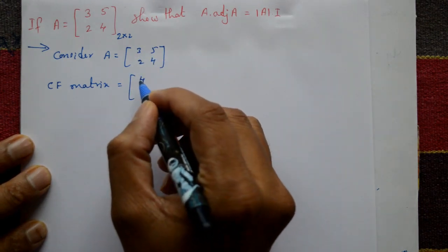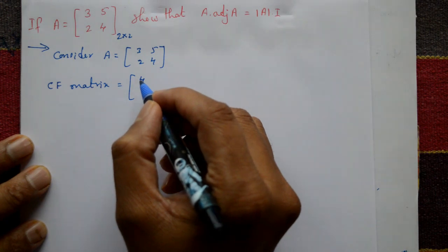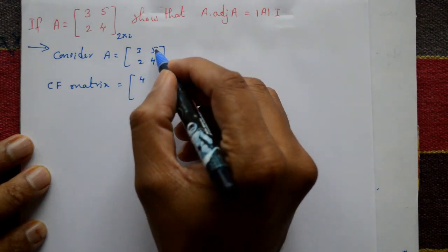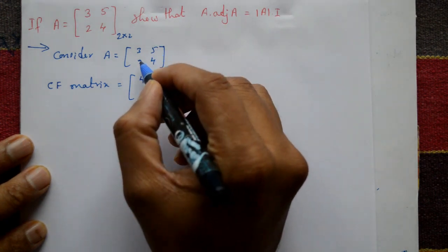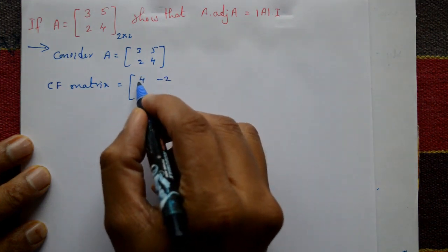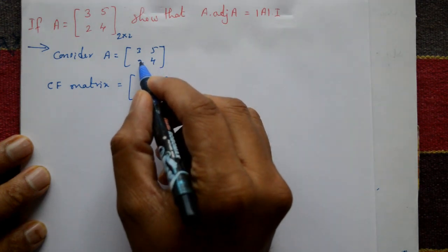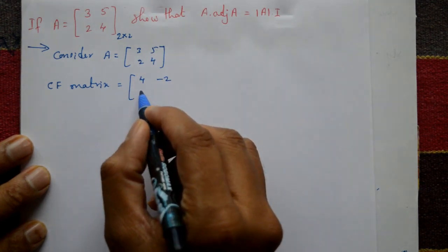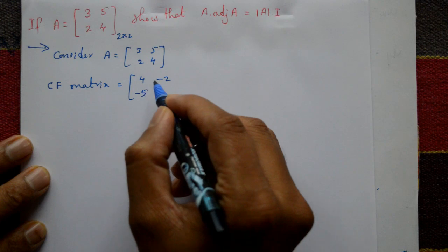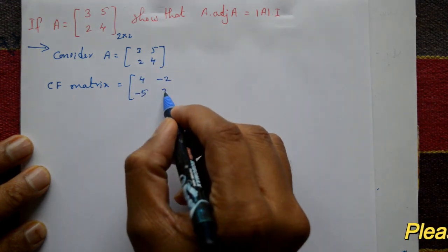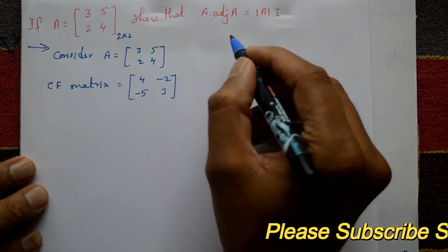Now cofactor of 5 is minus 2, plus minus minus plus like this. Cofactor of 2 is 5, this is minus. Cofactor of 4 is 3. Now we require adjoint of A.